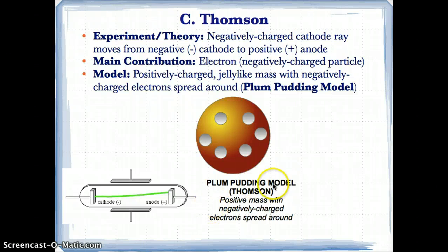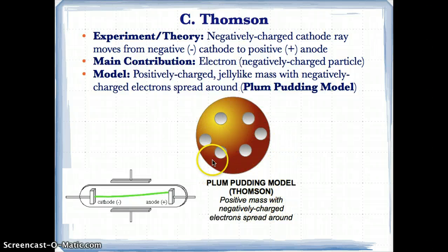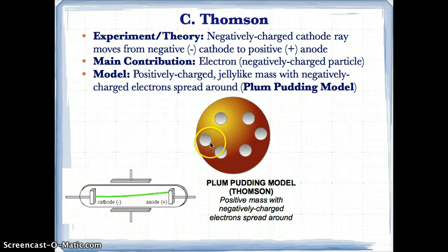The plum pudding model, proposed by Thomson, consists of a positively charged jelly-like mass with negatively charged electrons spread throughout.